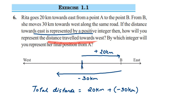Now we have to find the final distance. We are adding two integers with different signs — one is a positive integer, one is a negative integer. Whenever we add integers with different signs, we subtract them. So 30 minus 20 will be 10 km. But the sign depends on the greater number — comparing 30 and 20, 30 is greater and its sign is minus. So here we get minus 10 km.